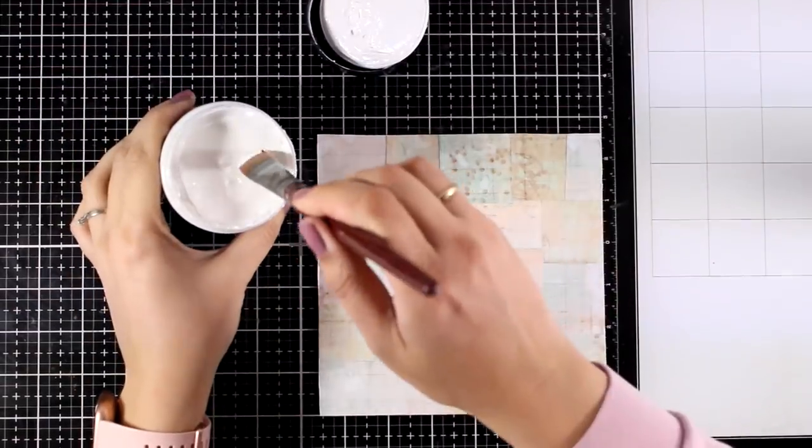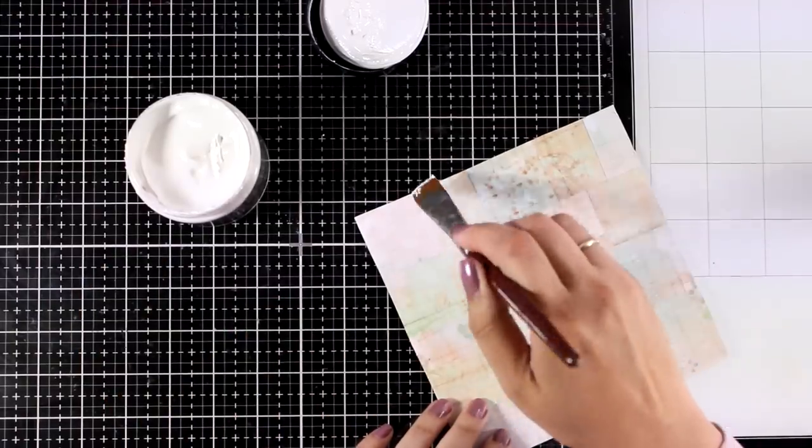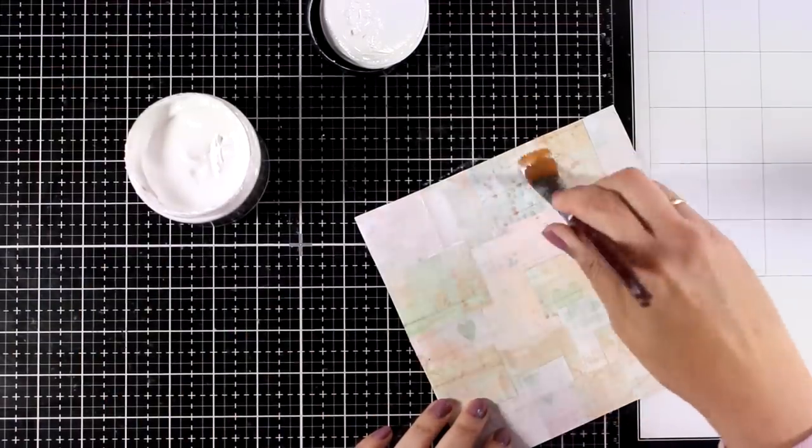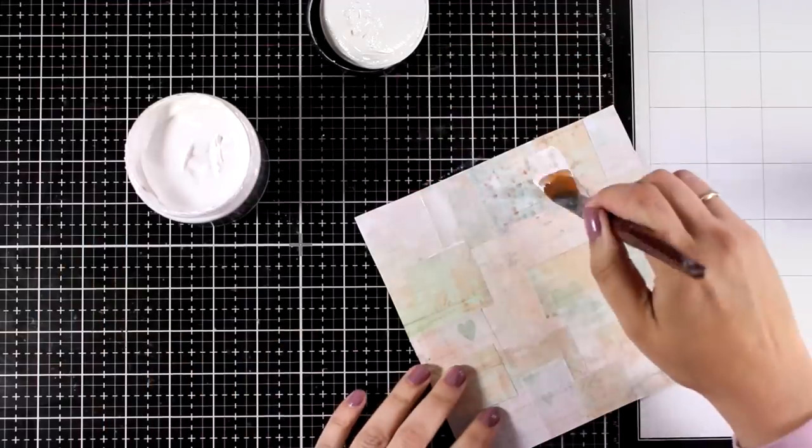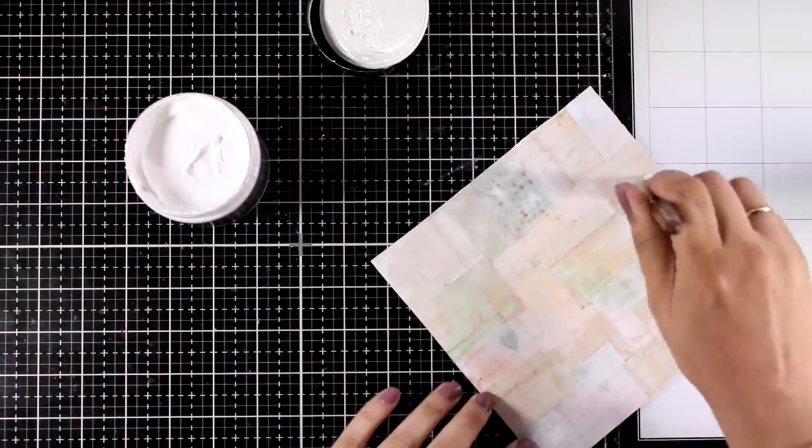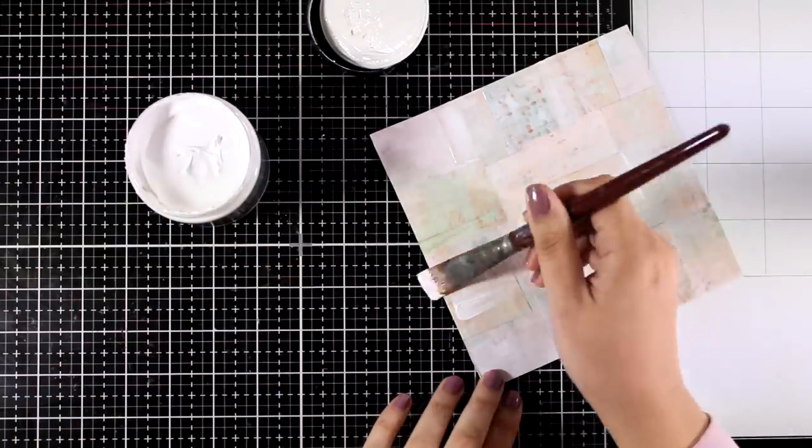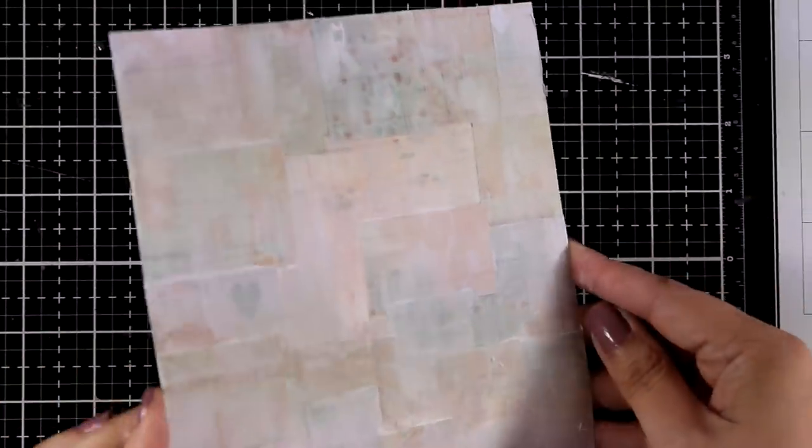For my next step, I'm going to use some gesso, and this is thick gesso. I'm going to add some brush strokes along the project. I like to have some lighter areas at the background. I also love those brush strokes, and at the same time it works as an eraser. If you find that in an area the patterned paper is too busy, you can always go over it with gesso.